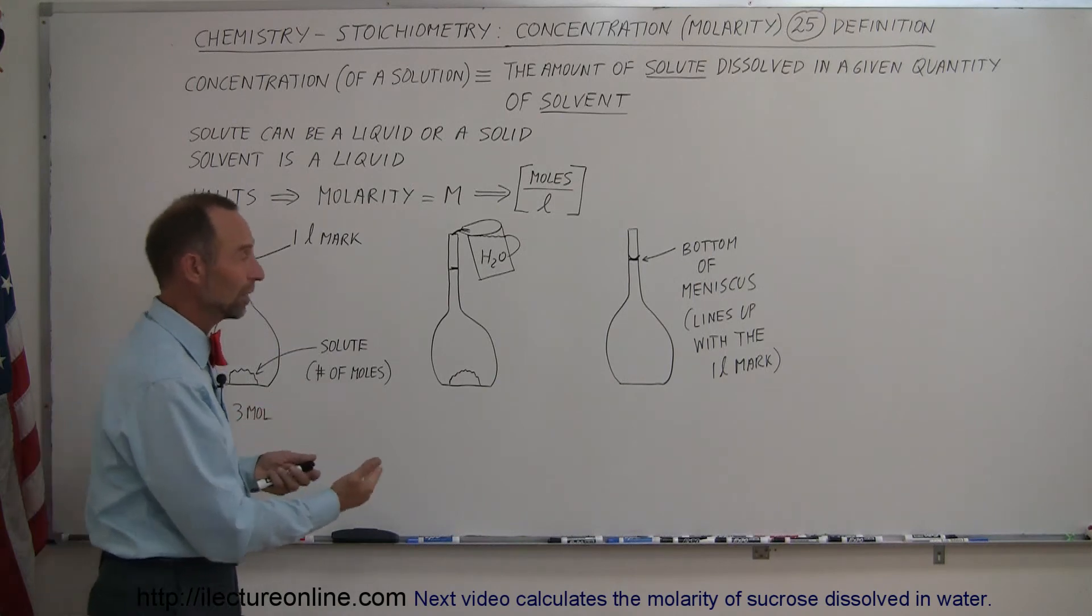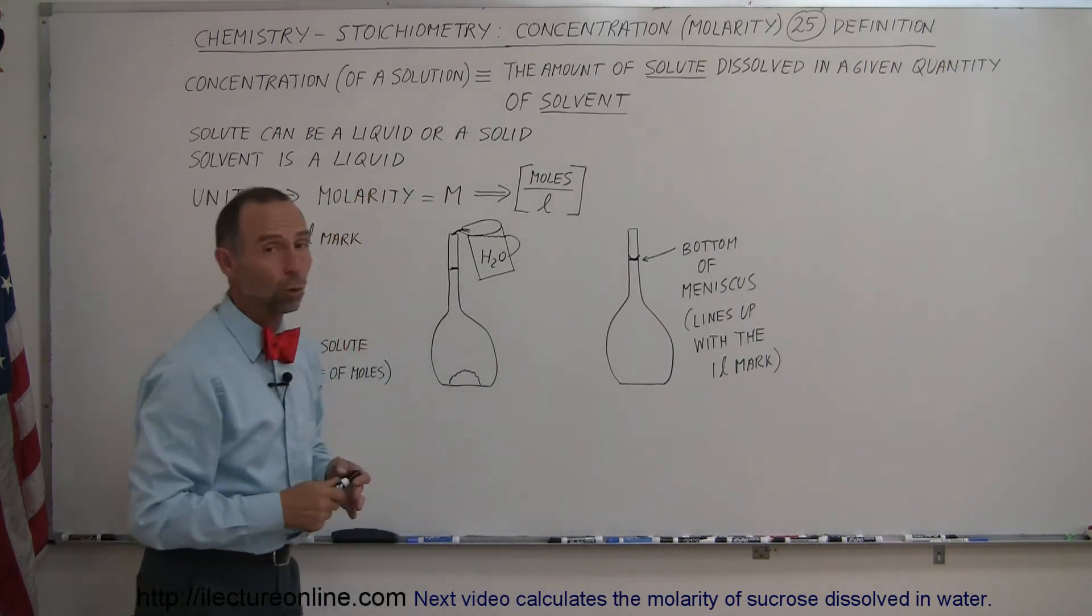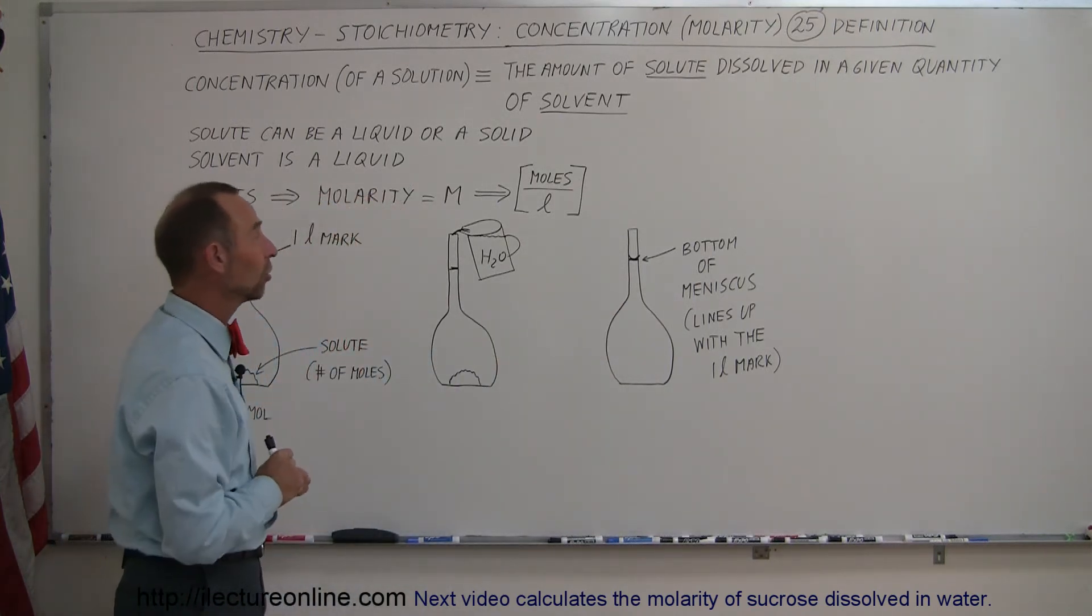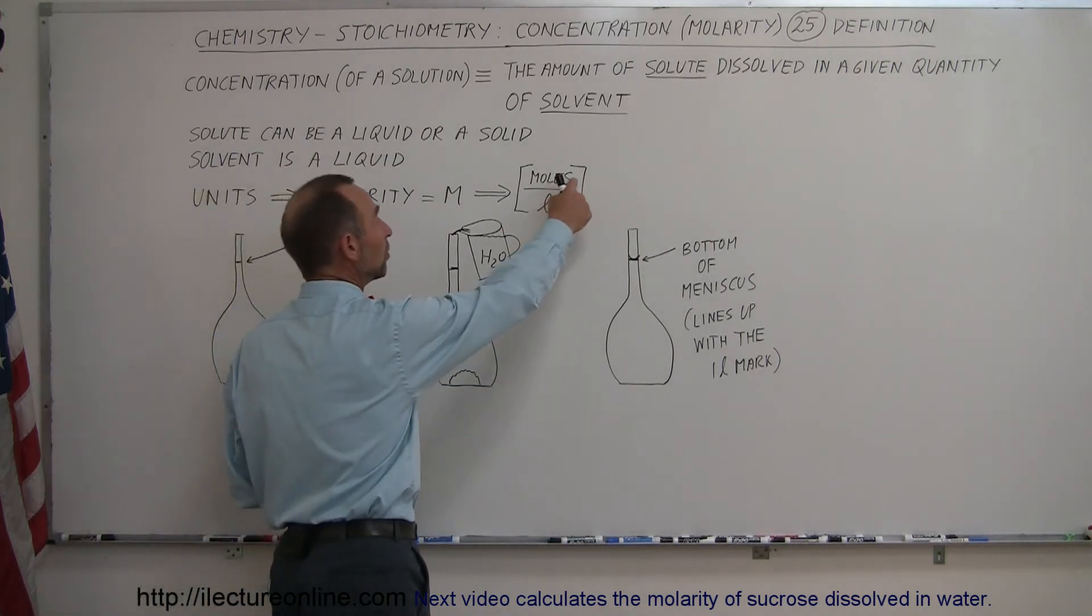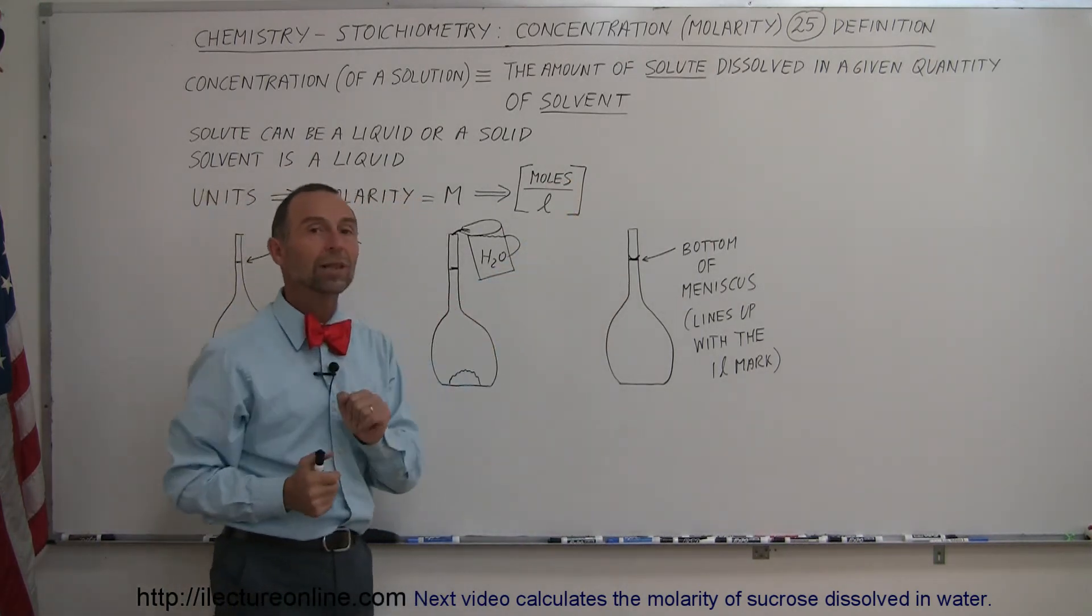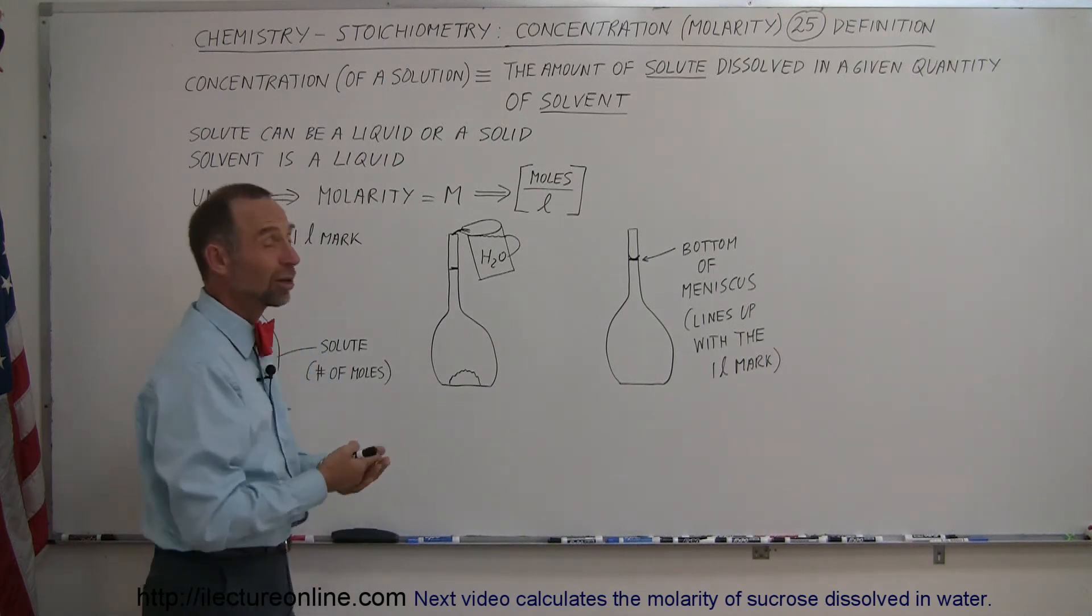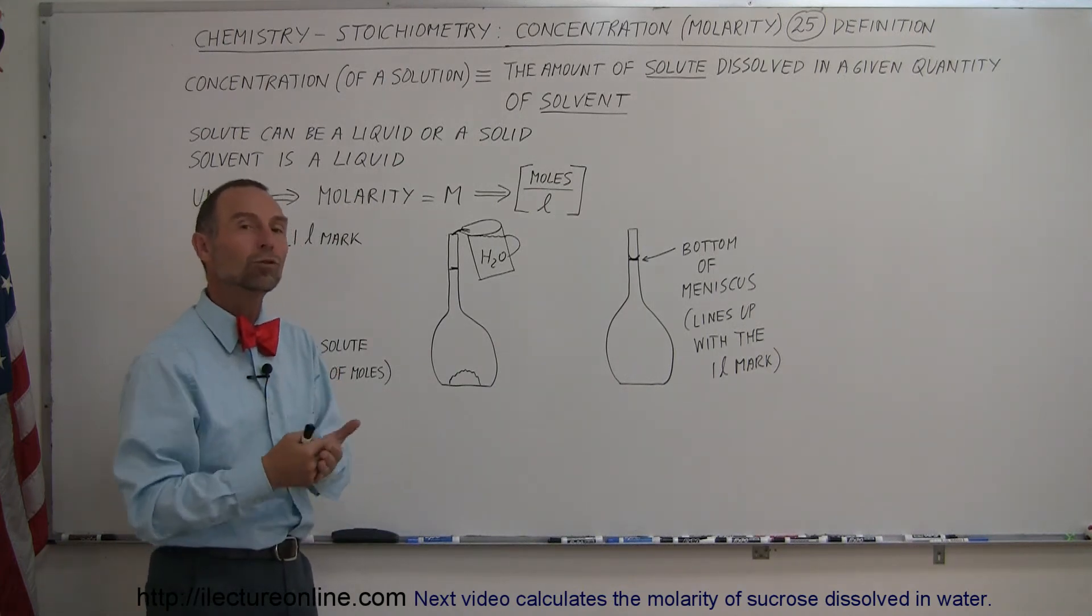And now by definition we know the exact concentration or the exact molarity of that solution. We know the number of moles, which would be three, and we know that all of it together adds up to one liter. And so in this case the molarity or concentration would be three moles per liter.